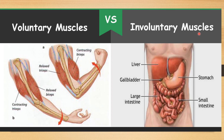Examples of involuntary muscles include the muscles of the stomach, liver, heart, small intestine, and large intestine, which carry out involuntary functions.